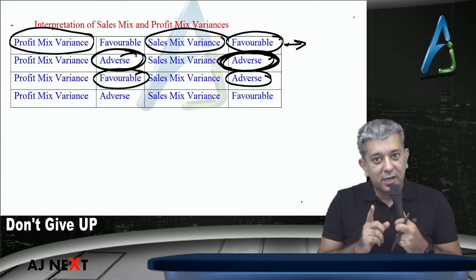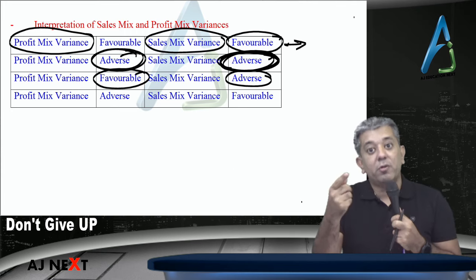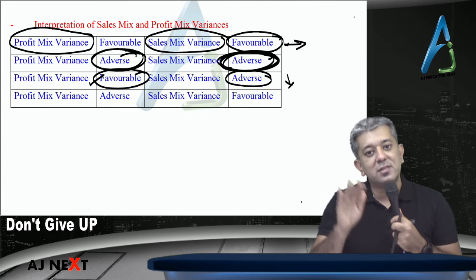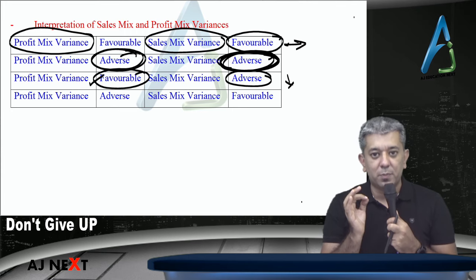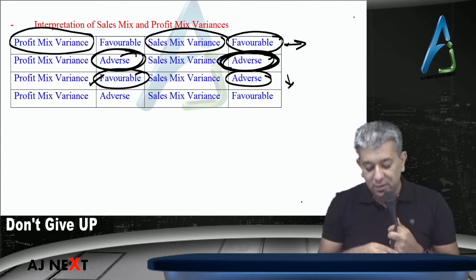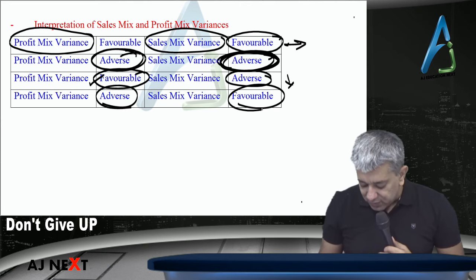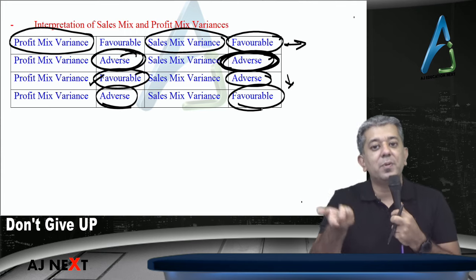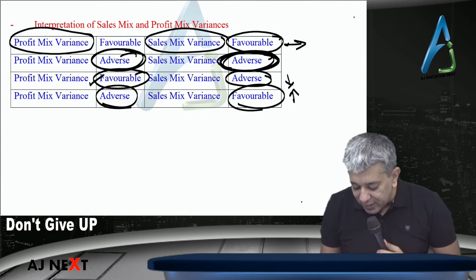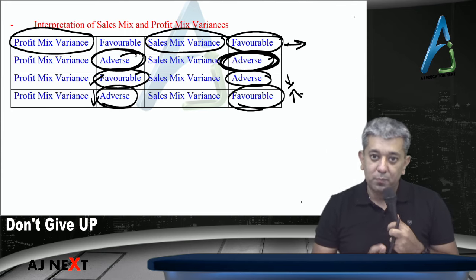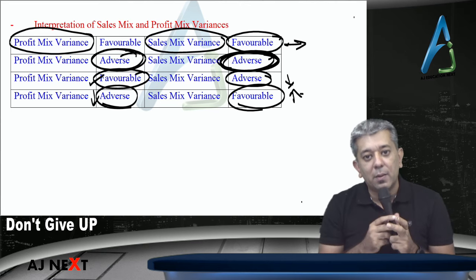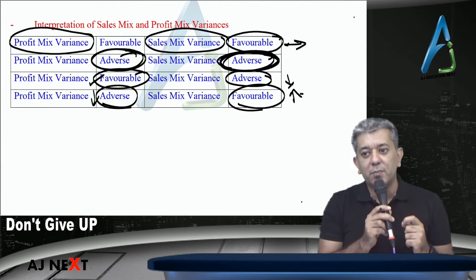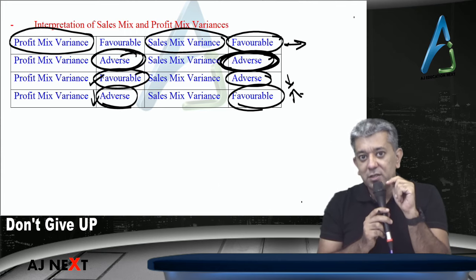Second case — both adverse. That means you have changed the ratio in favor of products which have lower selling price, and those products with lower selling price must also have lower profit. So company's sales went down and company's profit also went down. Third case — profit mix variance favorable but sales mix variance adverse: the company changed the ratio in favor of products which have higher profit but lower selling price. So profit went up but sales went down.